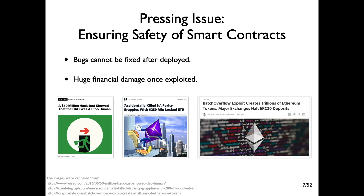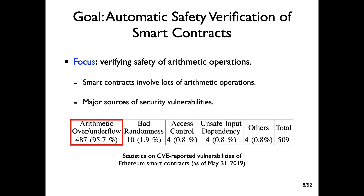Indeed, there have been a number of disasters due to security vulnerabilities in smart contracts. Therefore, developing techniques for ensuring safety of smart contracts is critically important. In this work, we aim to develop a technique for automatically verifying safety of smart contracts, focusing on arithmetic operations, because smart contracts typically involve lots of arithmetic operations and they are likely to be major sources of security vulnerabilities. For example, arithmetic over- and under-flows account for 96% of CVEs assigned to Ethereum smart contracts.